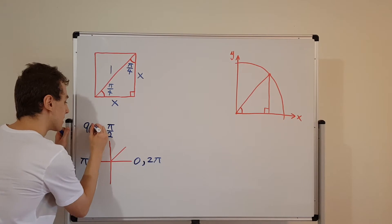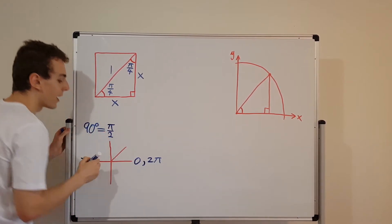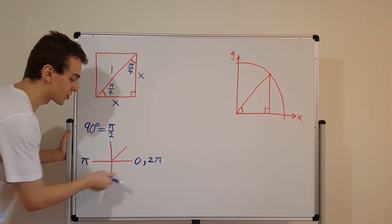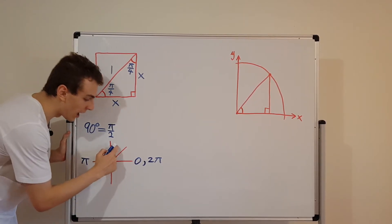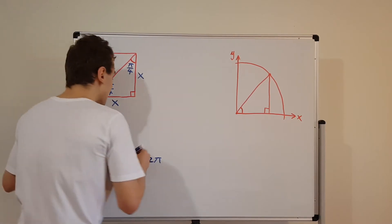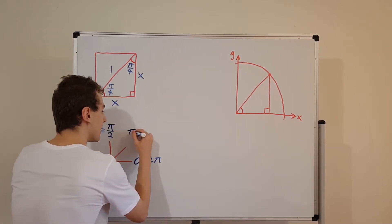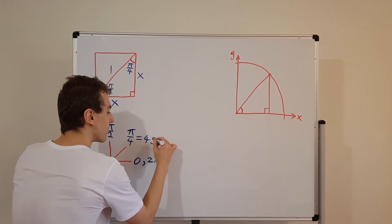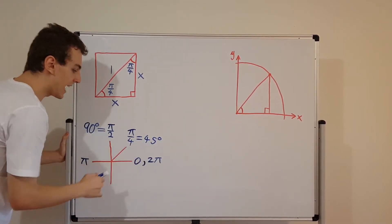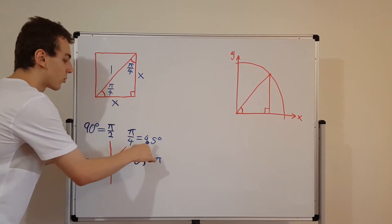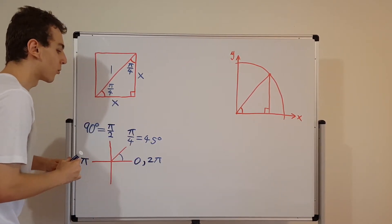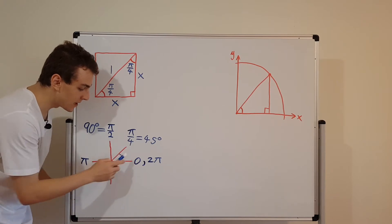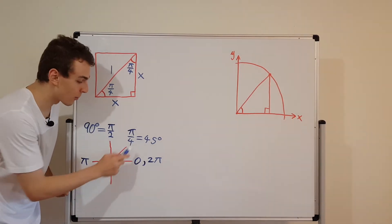Pi on 2 radians is the same as 90 degrees — that's a quarter of the entire circle. And if you just want to go half of that angle, that's the same as pi on 4, which is equal to 45 degrees. This is the angle we're interested in. In the entire circle, you can fit 8 slices that are pi on 4 radians.